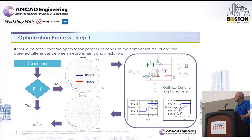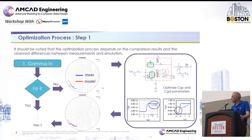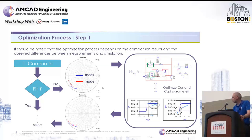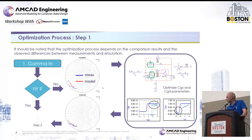The very first step is to optimize the CGS and CGG parameters to align the input reflection coefficient with the measurement. On the top side we have the initial model response over large signal harmonic balance simulation, and finally we can see a rather good fit looking at the input reflection coefficient of the transistor when we optimize the different parameters of CGS and CGG. On the right side we have different parameters: we can play with the threshold of the CGS and CGD values, and also with the VGS values that trigger the different slopes of the nonlinear capacitance model behavior.